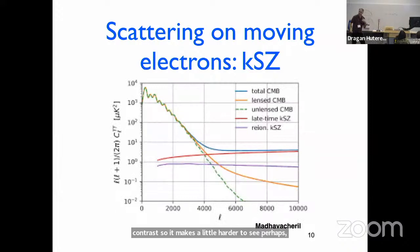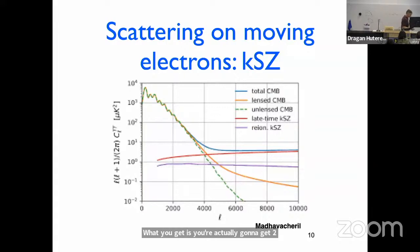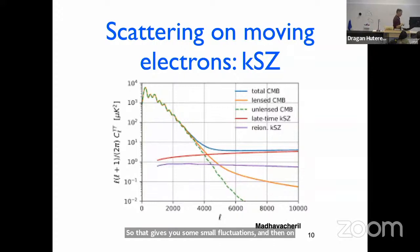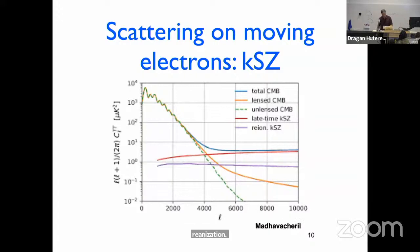If you look at the CMB power spectrum contribution, you get two contributions. There's the stuff coming from large-scale structure — galaxies and clusters all around us sloshing along the line of sight. On top of that, there's a contribution from ionization. The large-scale structure part we think we can calculate pretty well, but the part coming from ionization is basically completely unknown because we don't know how ionization happens. Measuring this late-time KSZ would tell us something about the early stages of ionization, and we should have measurements maybe even in the next year.